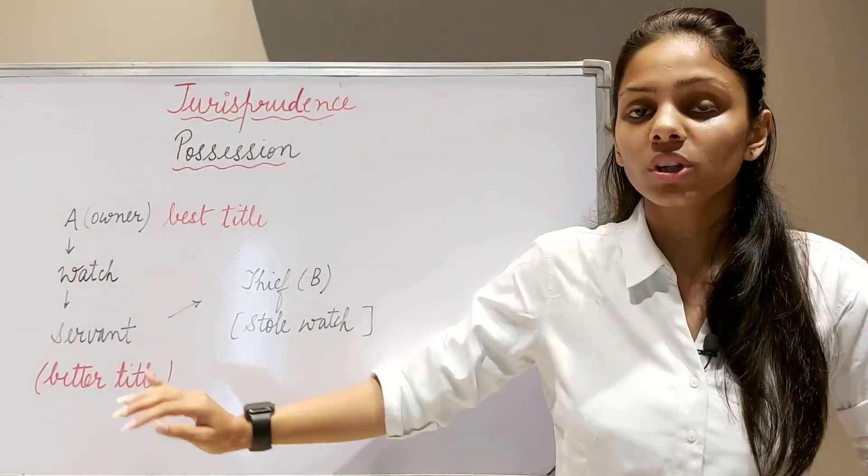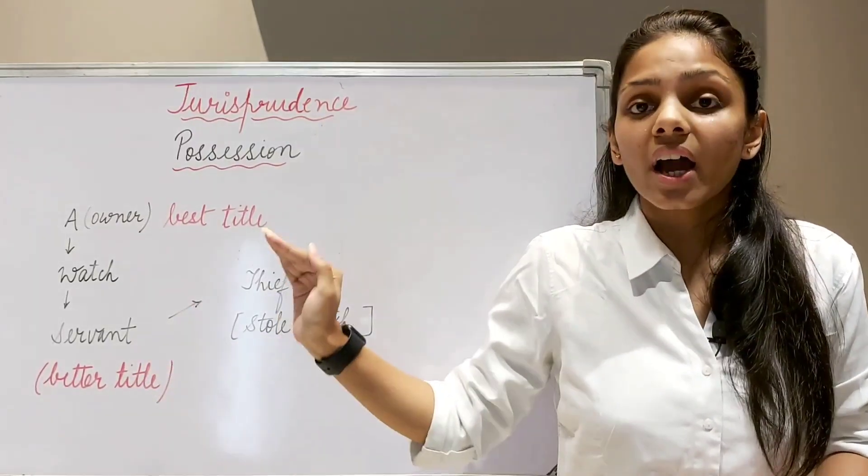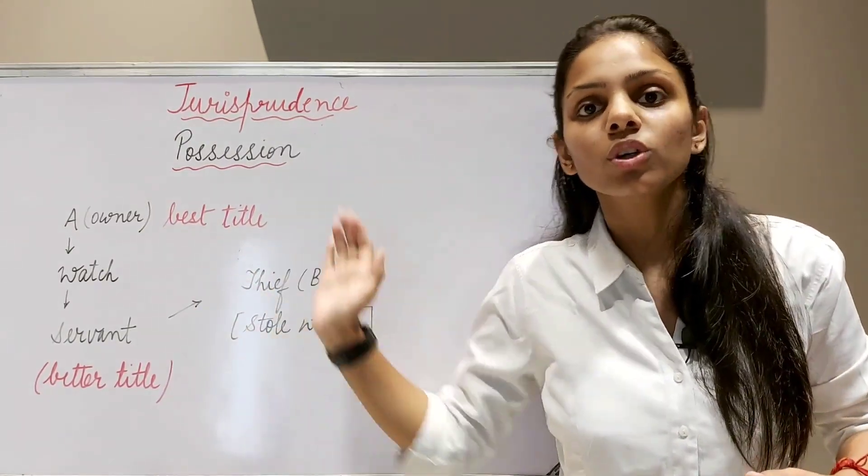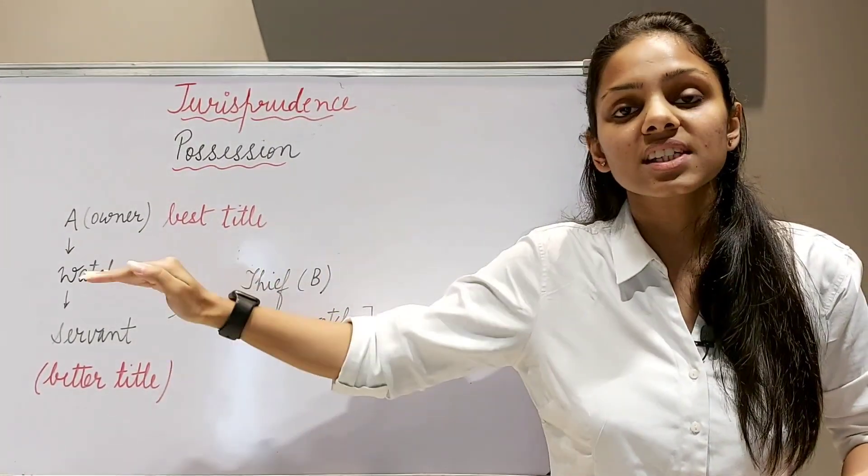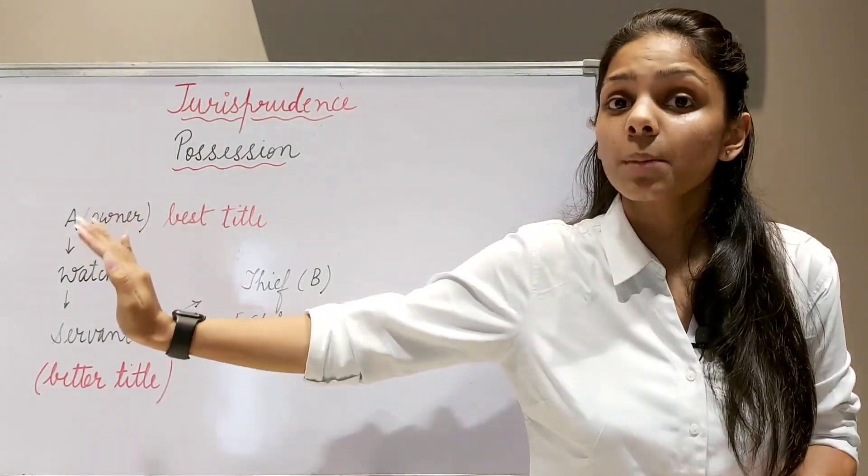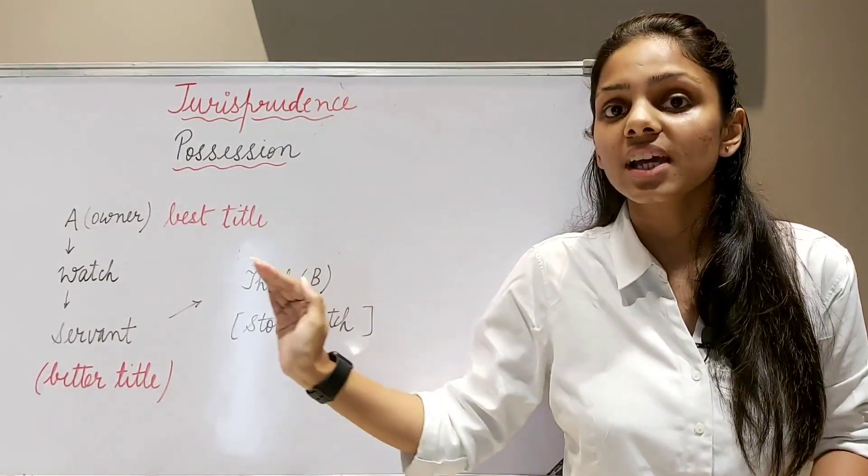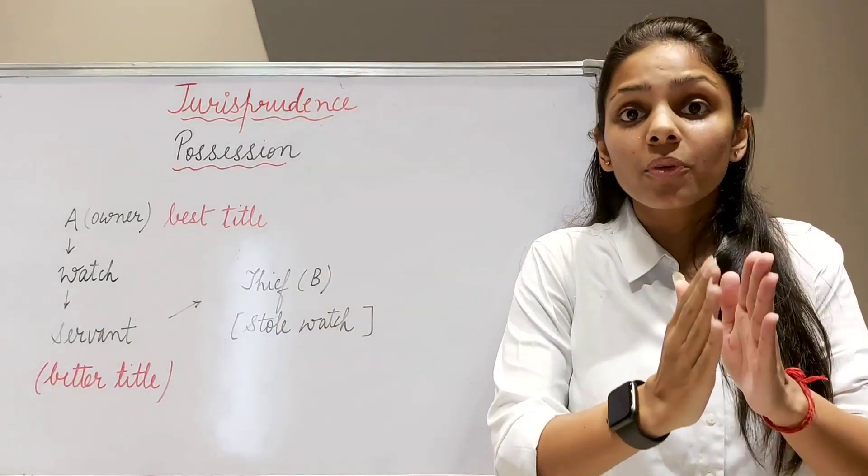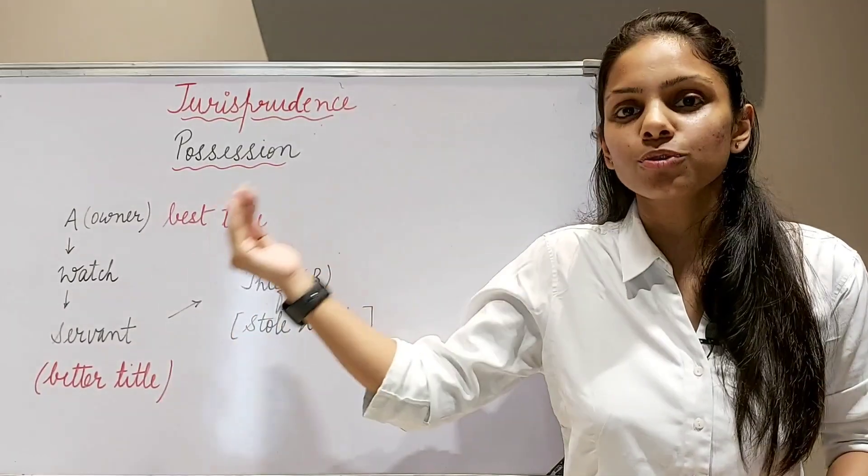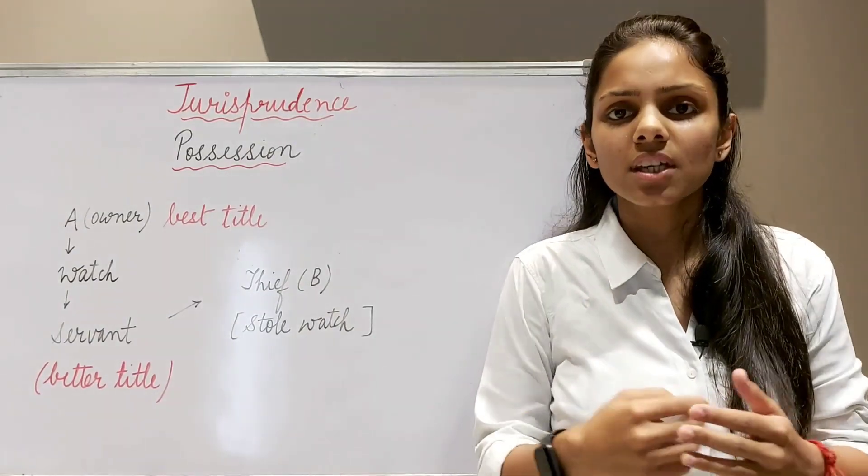I hope guys it's clear now. So we say that this person, whoever has better title, he has this better title against world at large. In the whole world, world at large, right in rem. In the whole world, his is the best title, but guys as against this person, he has none. Against him, he has no title because he has best title, but servant has a better title as against world at large except the true owner. This is called right in rem, right in rem means right against the whole world. Against the whole world, so this servant has better title except the true owner. Based on this illustration guys, we have a case law.